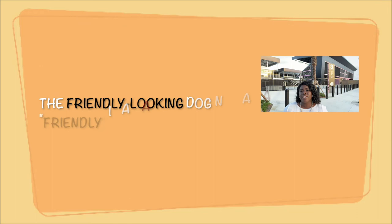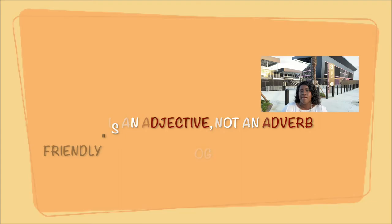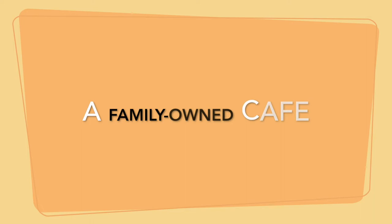However, there are exceptions that people tend to confuse. For example, 'the friendly-looking dog' — you would hyphenate between 'friendly' and 'looking' because the '-ly' word here is not an adverb. Similarly, 'a family-owned cafe' — 'family' is not an adverb. So even though these expressions end in '-ly,' they go contrary to the previous rule because they are not adverbs.